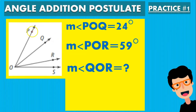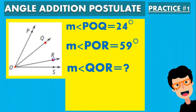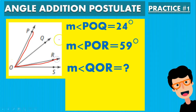The first angle is angle POQ, meaning they're talking about this angle right here. Then we have angle POR — that's 59 degrees, so it's this whole angle right here. And then they're asking us for angle QOR, so this angle right here. We have to see that ray OQ is between rays OP and OR.